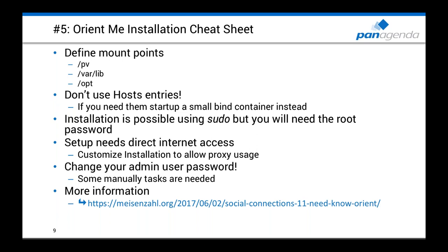The second directory should also be a mount point so it can be expanded and your root directory won't fill up. The default IBM installation path at /opt is also used with OrientMe but only for the installation directory and some certificates, so it's not very large and a mount point there is not critical. The important second tip: do not use host file entries in your OrientMe installation. Host file configurations on your local machine won't resolve inside containers — containers can only use DNS settings. If your connections server must be resolvable inside containers, it must be in your DNS.